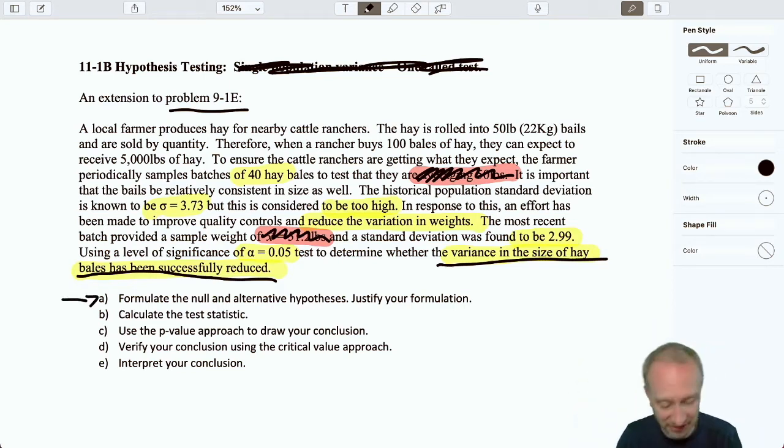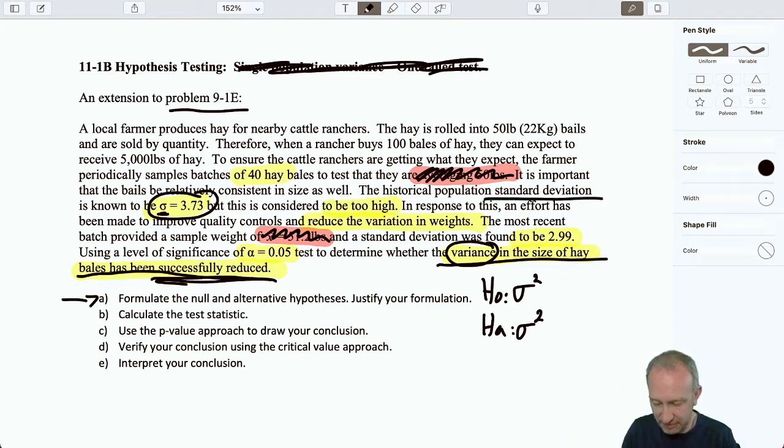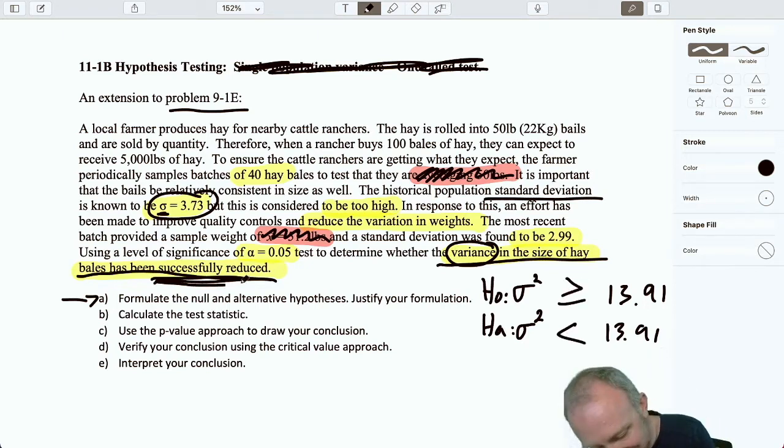Step one, formulate our test. So I have a null and I have an alternative hypothesis. I know I'm testing a variance, so I'm going to set that up as a variance. And we want to see whether or not it has been successfully reduced. So our historic level here has been 3.73. That was a standard deviation. I'm going to convert everything to a variance. Just because I find it makes life a little bit easier. It's not a requirement, but given that I've written this as a variance, I have to be consistent with how I'm writing my numbers and how I'm writing my notation. So to be consistent, I'm converting everything to a variance. My hypothesized value is 13.91. And I want to perform a test to see if we have evidence to show that our variance is now less than 13.91, that it's been successfully reduced.